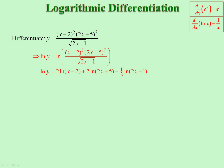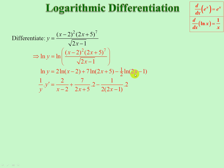Using this rule now: write 1 over y times the derivative of ln, times y prime for the derivative of the inside. Then 2 over x minus 2, plus 7 over 2x plus 5 times derivative of the inside 2, minus — that 2 there is the half — 1 over 2x minus 1, times derivative of the inside 2. Multiply up by y and there we are.